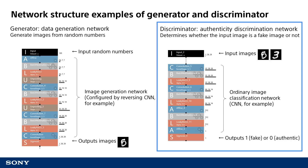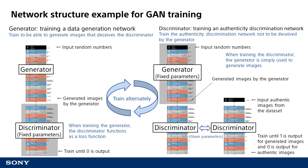For the discriminator, we could use a normal binary classification CNN. This neural network is configured to determine if an input image is fake or authentic — it will output a 1 if it determines a fake image and a 0 if it determines an authentic image. Next, I will describe the process to alternately train the generator and discriminator. While a little complicated, I will describe this without using formulas.